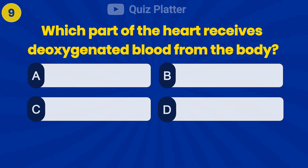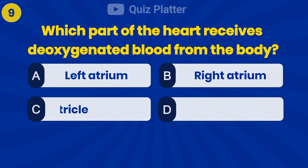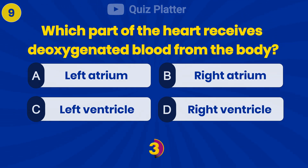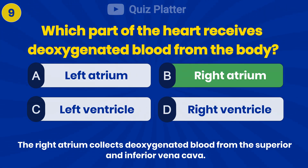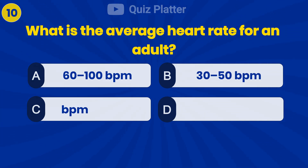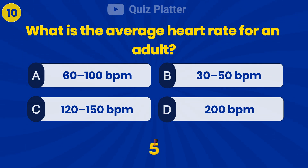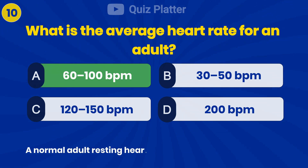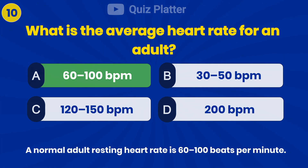Which part of the heart receives deoxygenated blood from the body? Answer B: Right atrium. What is the average heart rate for an adult? Answer A: 60 to 100 beats per minute.